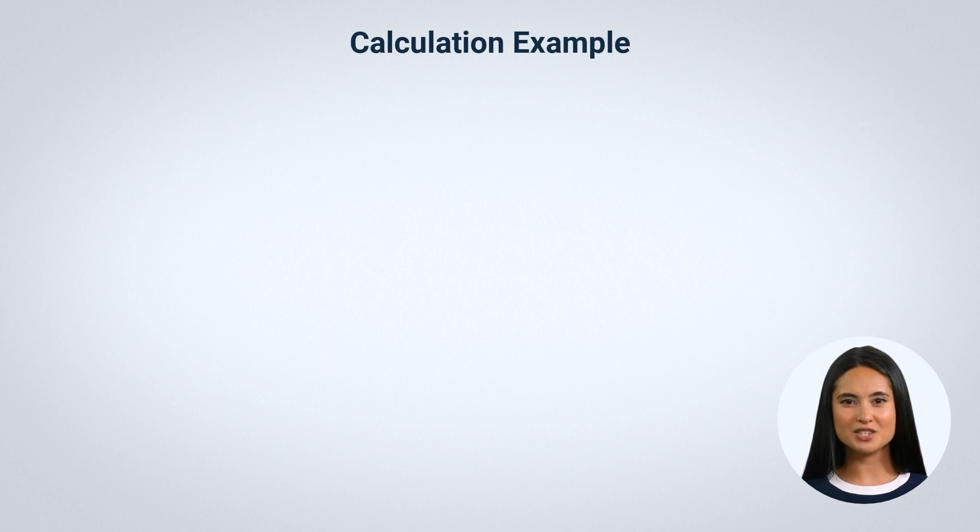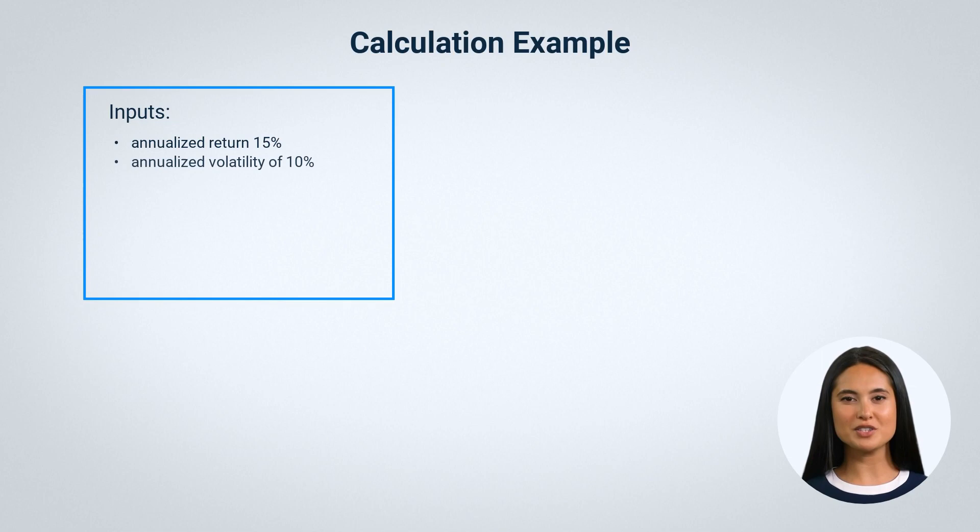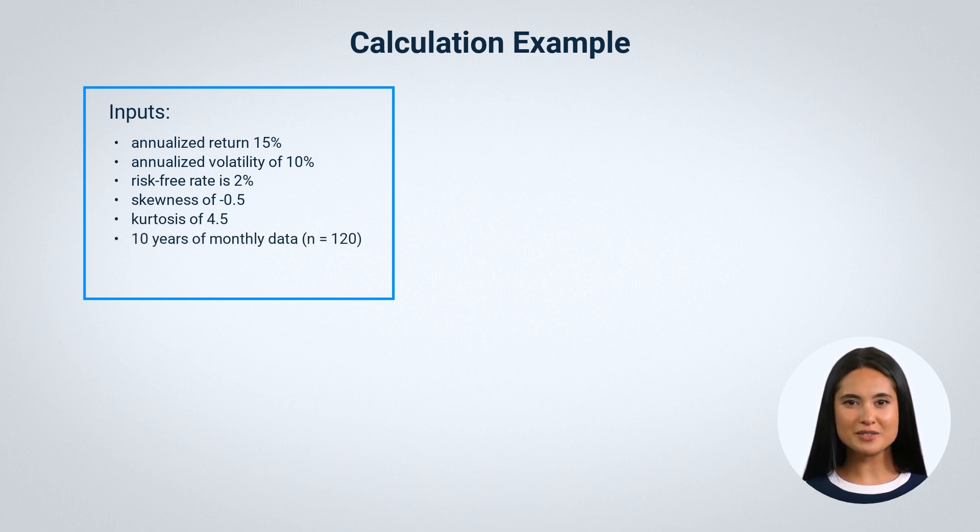Let's say you have a trading strategy that has an annualized return of 15% and an annualized volatility of 10%. The risk-free rate is 2%. The strategy has a skewness of minus 0.5 and a kurtosis of 4.5. You have tested this strategy on 10 years of monthly data, so n equals 120. You want to know if this strategy has a statistically significant Sharpe ratio at the 5% significance level.